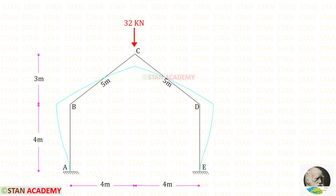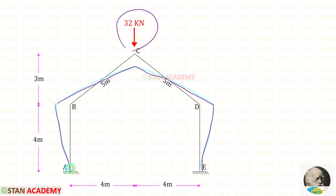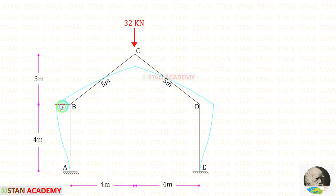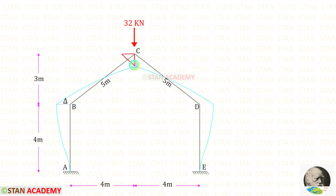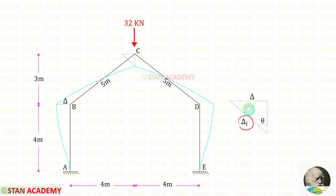Now let us see how this frame deforms. Because of this point load, the frame deforms in a particular way. Let us call this displacement delta. Drawing a parallel line to BC and connecting the points with a horizontal line forms a triangle. If this horizontal distance is delta, this perpendicular distance is also delta. Let us call the inclined distance delta_I, and we need to find delta_I in terms of delta. The angles in this triangle are all equal — let us call the angle theta.